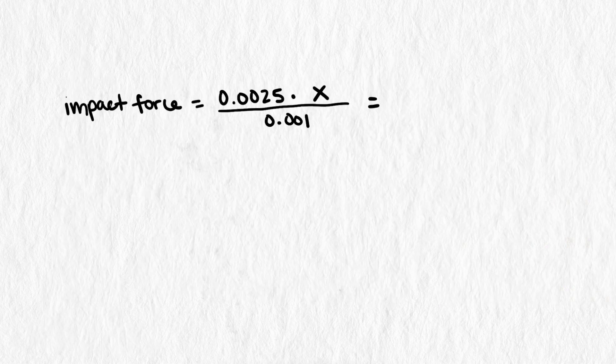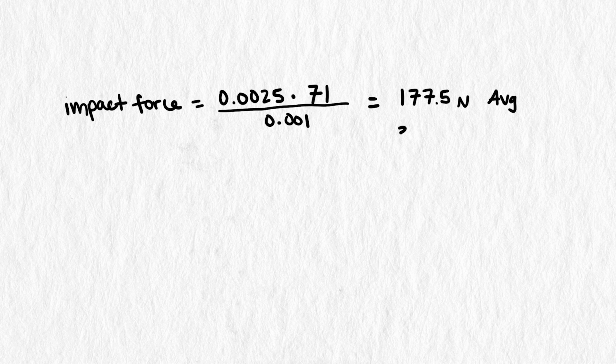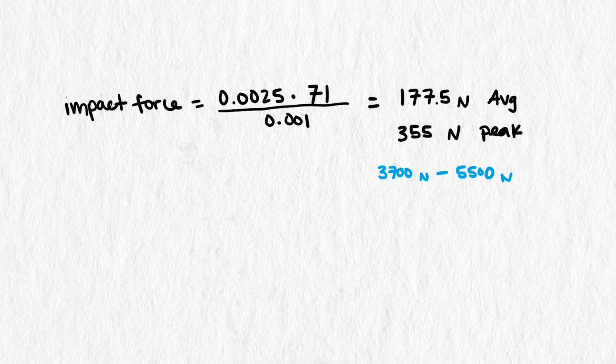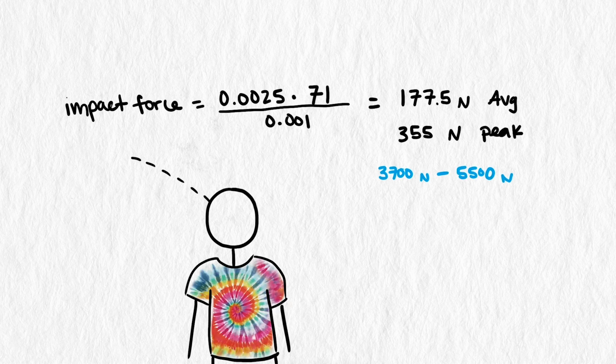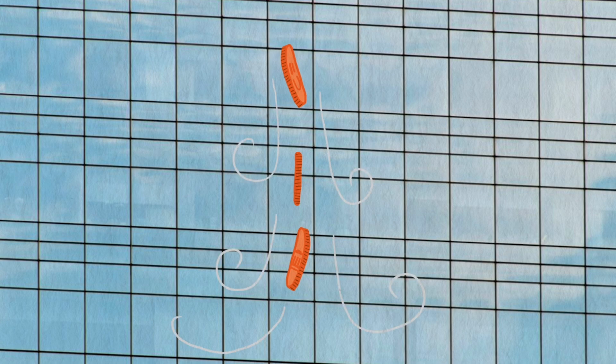Pretty fast, actually. Now we can plug that into our impact force equation, and we can get 177.5 newtons of average impact force and a peak of 355 newtons. Neither the average nor the peak are in the range we determined was needed for death. It might leave you with a small goose egg, but not much else. So falling on its edge still isn't quite enough for death.